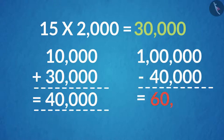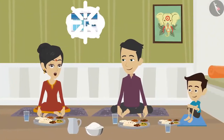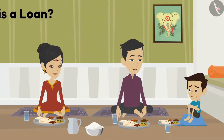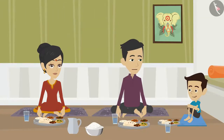That means we have to borrow 60,000 rupees from somewhere. Why don't we take a loan from the bank? But we have to pay interest on that money. Yes, of course we have to pay, but we can pay it when we start making profit. Dad, what is a loan? Why will the bank give us a loan?